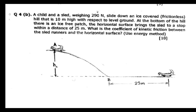At the bottom of the hill there is an ice-free patch. The horizontal surface brings the sled to a stop within a distance of 25 meters. The question is: what is the coefficient of friction between the sled and the horizontal surface?